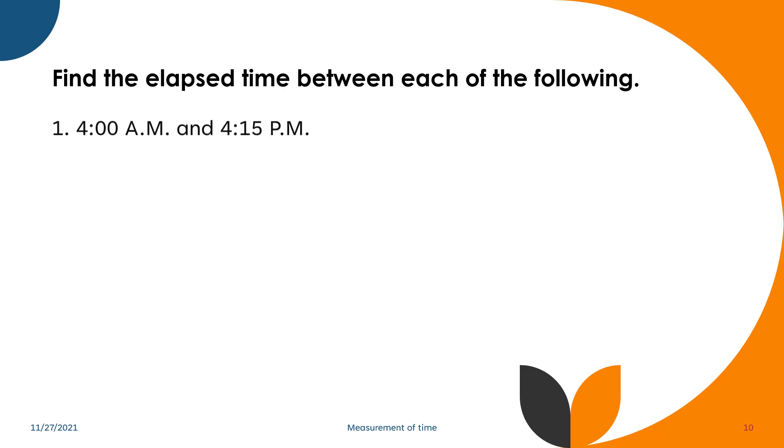So let's find the elapsed time between each of the following. We have from 4 a.m. to 4:15 p.m. So we know that's from 4 a.m. to 4 p.m., that is equivalent to 12 hours. 12 hours, so that we have 15 minutes. So that means that's equivalent to the elapsed time is 12 hours and 15 minutes.